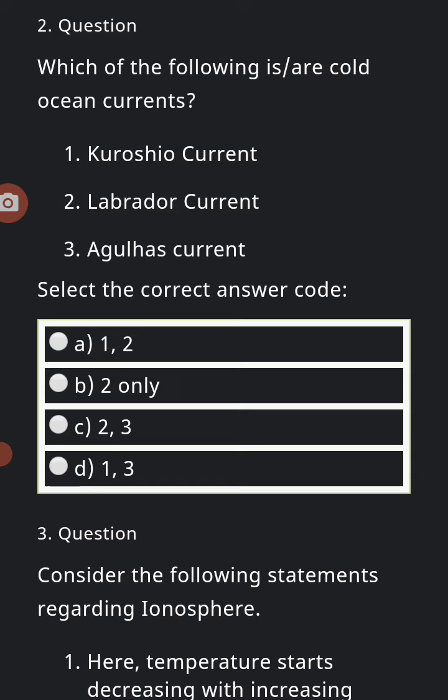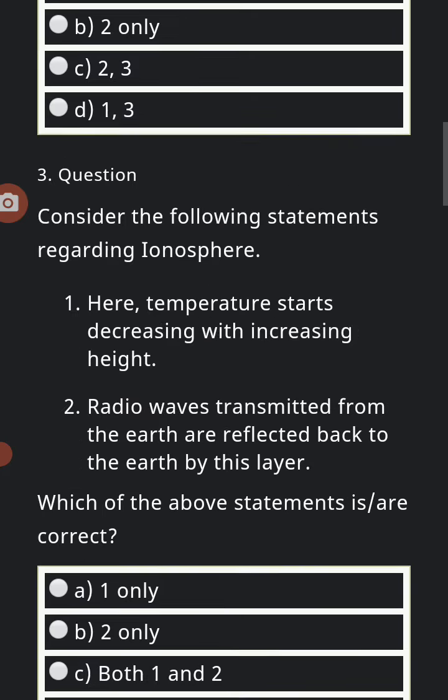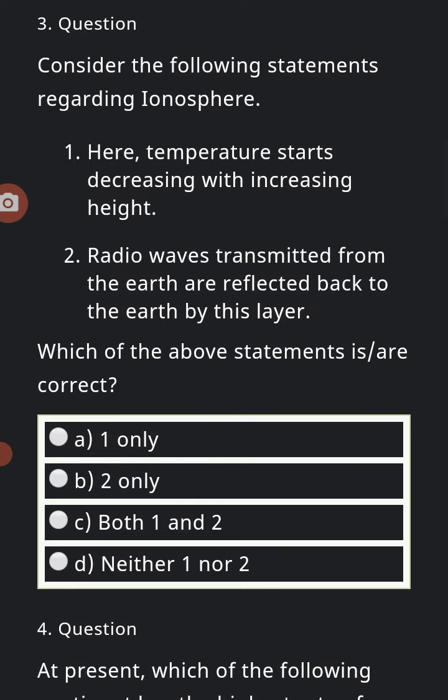The third question: consider the following statements regarding ionosphere. Here, temperature starts decreasing with increasing height. Radio waves transmitted from the earth are reflected back to the earth by this layer. Choose the correct option.